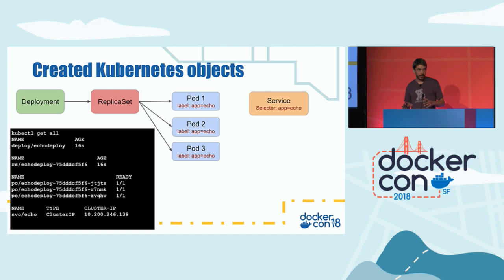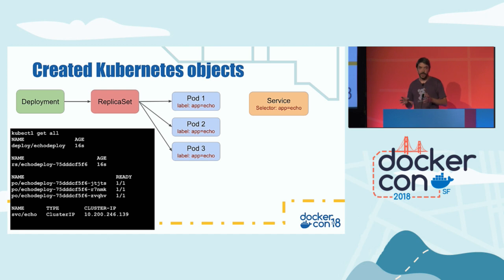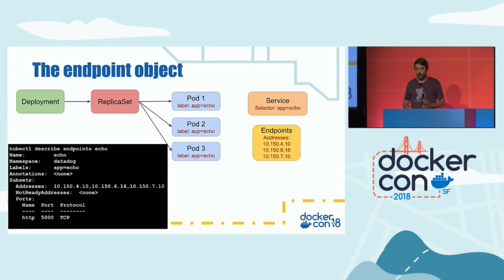When we create this, Kubernetes creates a whole set of objects: a deployment, then a replica set — basically an auto-scaling group — which ensures that at any given time we have three pods running. If one dies, the replica set creates a new one. All pods are labeled with 'app=eco'. There's also an additional object called endpoints, which is the list of IP addresses providing the service at any given time.